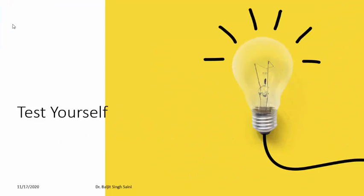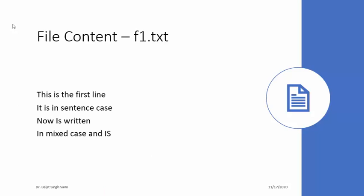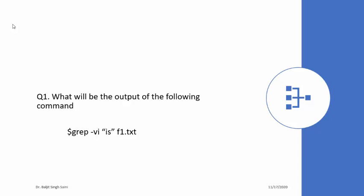Now it is time to test yourself by answering a few questions. Make sure you have the file content in f1.txt. Try to answer the questions by noting down which lines will be the output, then actually run the commands and compare whether your answers were correct. Question one: what will be the output if you use grep -vi 'is' in f1.txt? Remember -v gets lines which do not contain the pattern and -i ignores case.